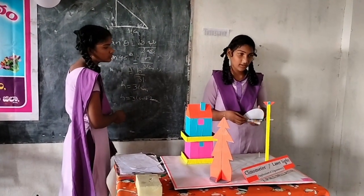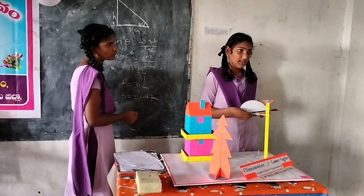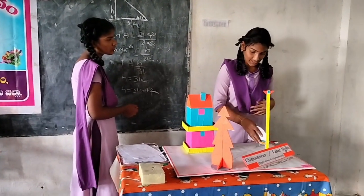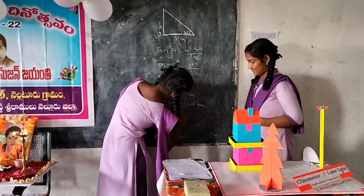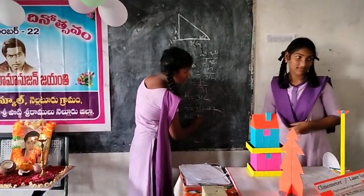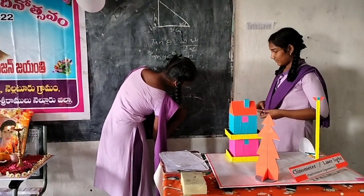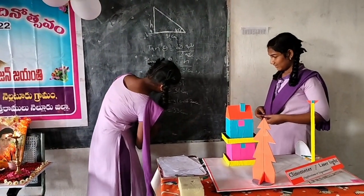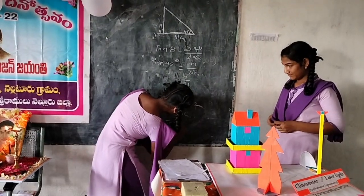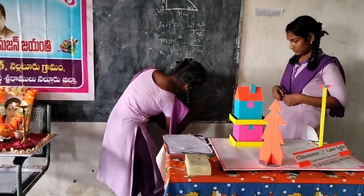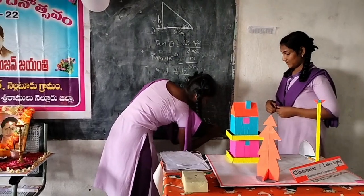So, Tan Theta is equal to 33 degrees. So, Tan Theta is equal to 33 degrees.